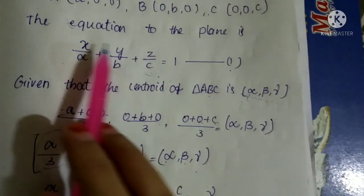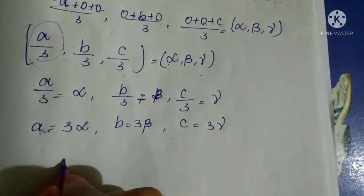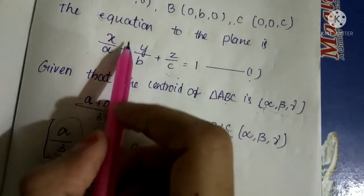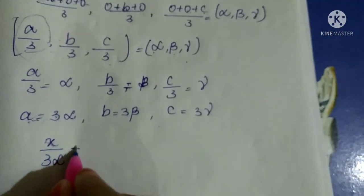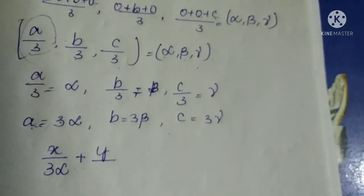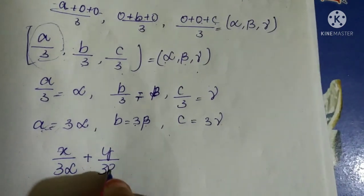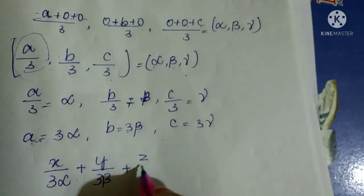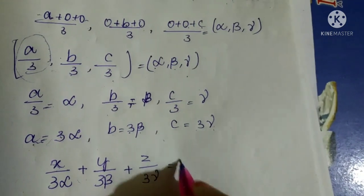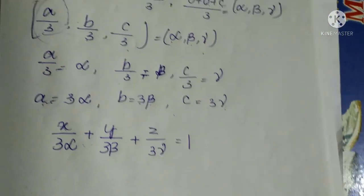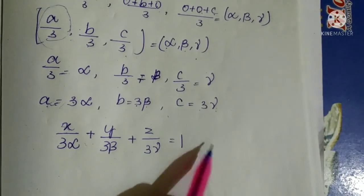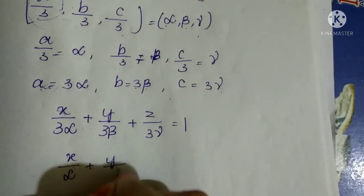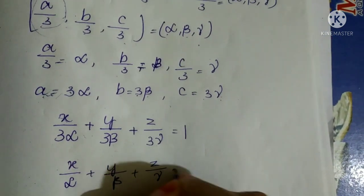Substituting into x/a + y/b + z/c = 1: replacing a with 3α, b with 3β, and c with 3γ, we get x/(3α) + y/(3β) + z/(3γ) = 1. This gives x/α + y/β + z/γ = 3.